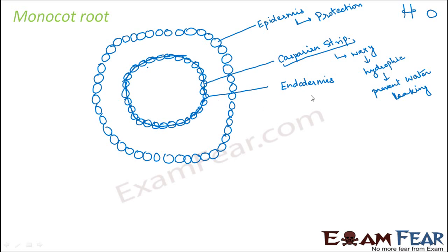The endodermis will regulate water and ions to move in or come out. Inside the endodermis is the vascular tissue — xylem and phloem — which are the conducting tissues that conduct food particles, nutrients, minerals, and water. If foreign particles get inside the vascular tissue, they could be conducted throughout the plant body and harm the entire plant. So the vascular tissue must be extremely protected, and that protection is provided by the endodermis and the casparian strip, which will not allow any foreign particles to enter inside.